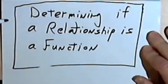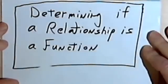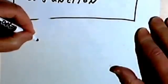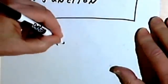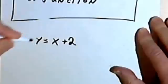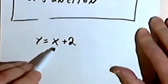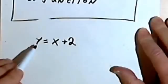This video is going to be about determining whether a relationship is a function. Let's take a simple example and understand what that means. Let's say I've got an equation like y equals x plus 2. We're going to say that x is the input — it's the independent variable — and y is the output, or the dependent variable.